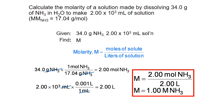Plugging both values in, 2.00 divided by 2.00 gives 1.00. The units moles per liter don't cancel out — we use the abbreviation capital M, which stands for moles of solute per liter of solution.